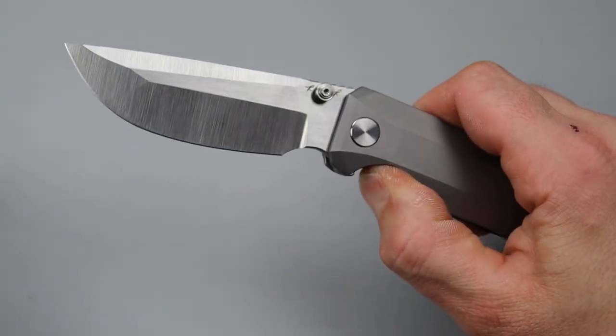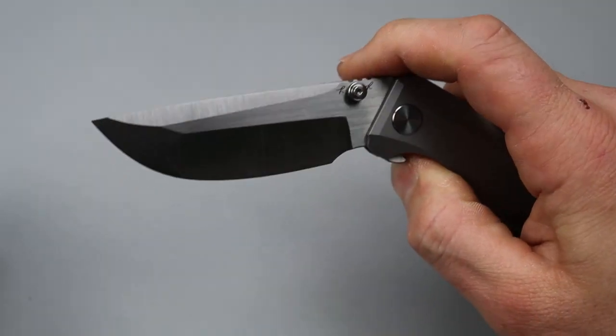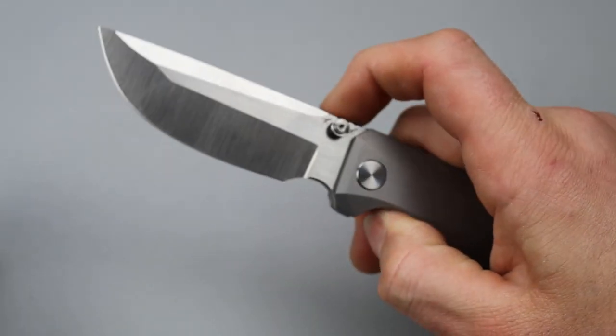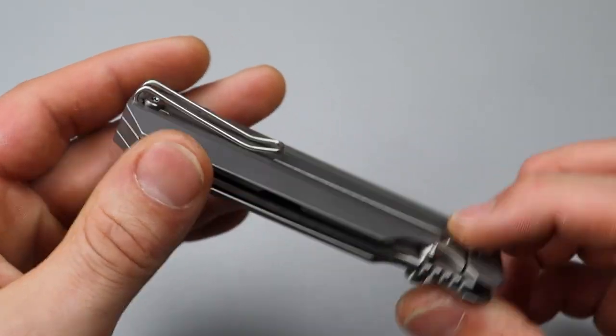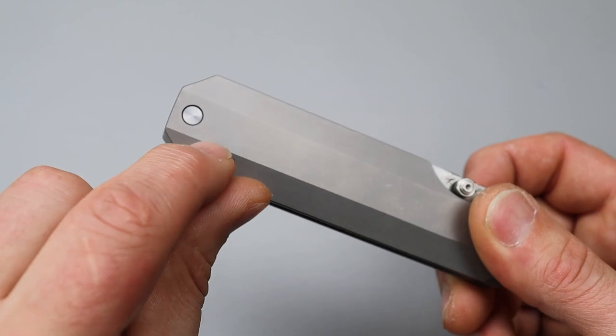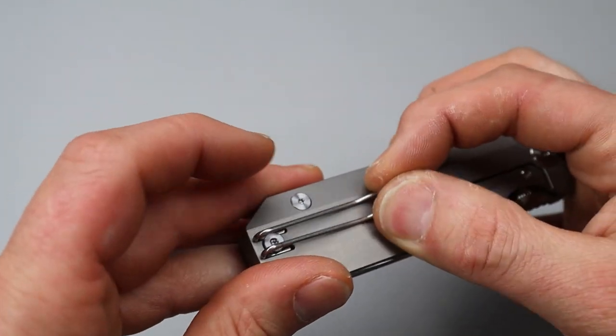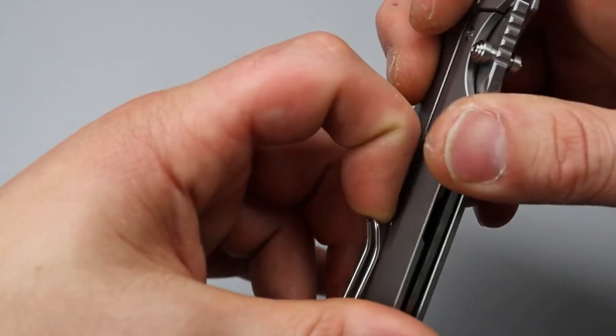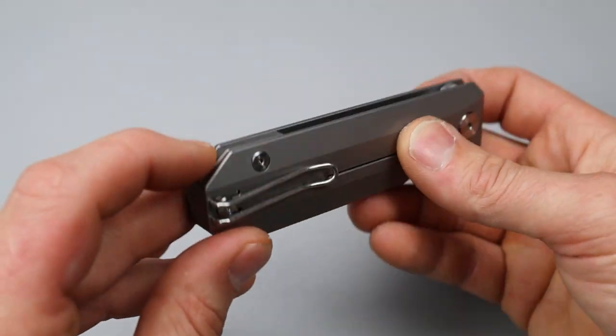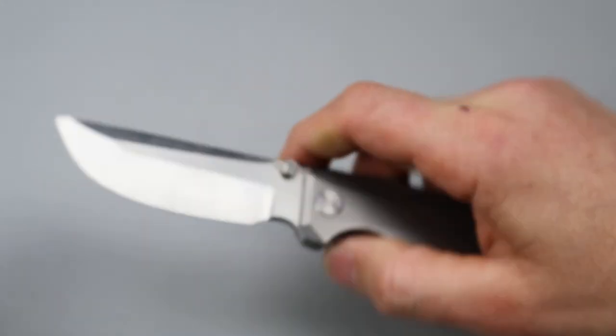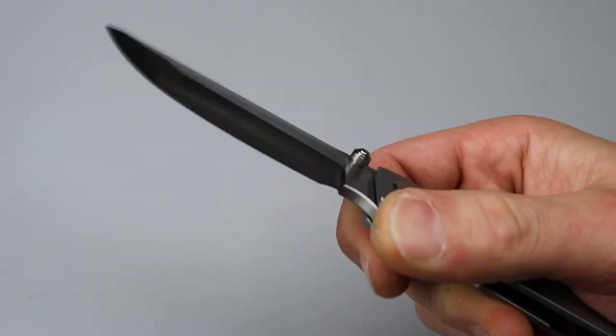Detent nice and early, easy to get past. I'm guessing it's on ceramic caged bearings. It is very, very smooth. Deep carry clip, not reversible but it is deep carry with a wire clip. Little tiny bit of side to side but I'm sure that'll work out great. We do have a backspacer, titanium backspacer. This says prototype on it because this is a prototype.